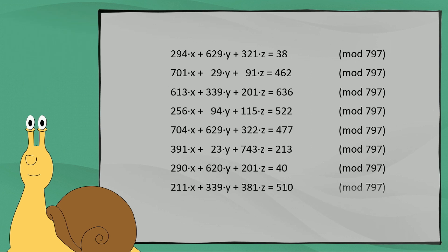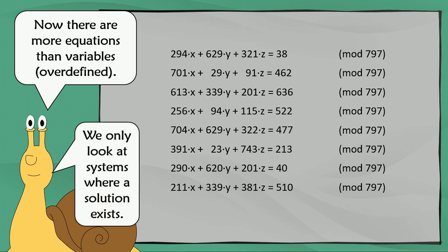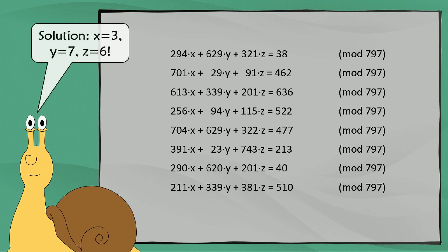Now we are going to add a few more equations. Now we have only three variables but eight equations — this is also called an overdefined equation system. What happens if an equation system is overdefined in general? It's unsolvable in general. But in this case I have chosen it in a way that it is always solvable, and the solution is x equals 3, y equals 7, z equals 6. It can easily be checked that this solution works.